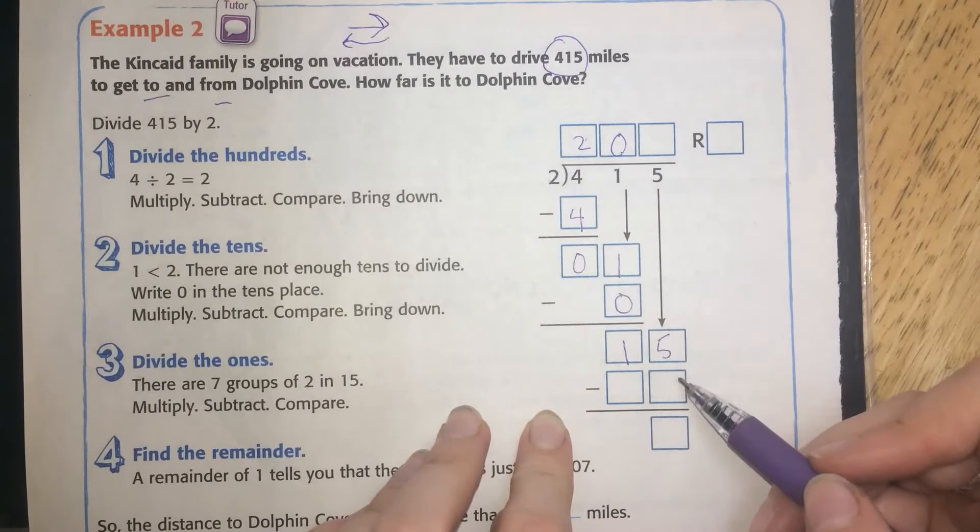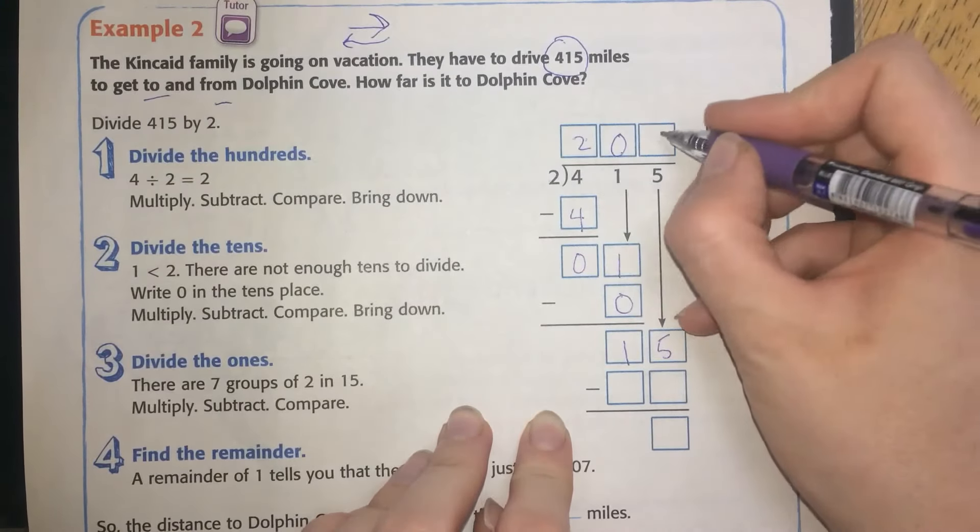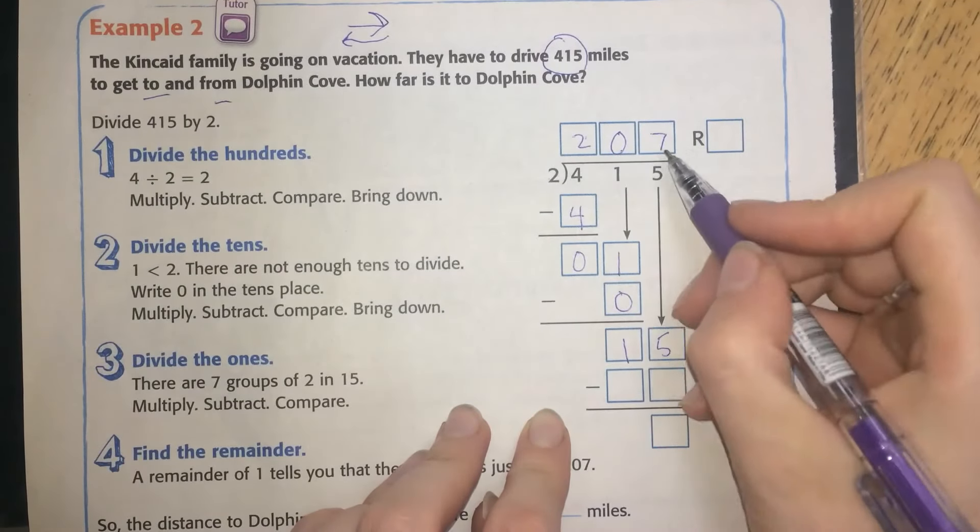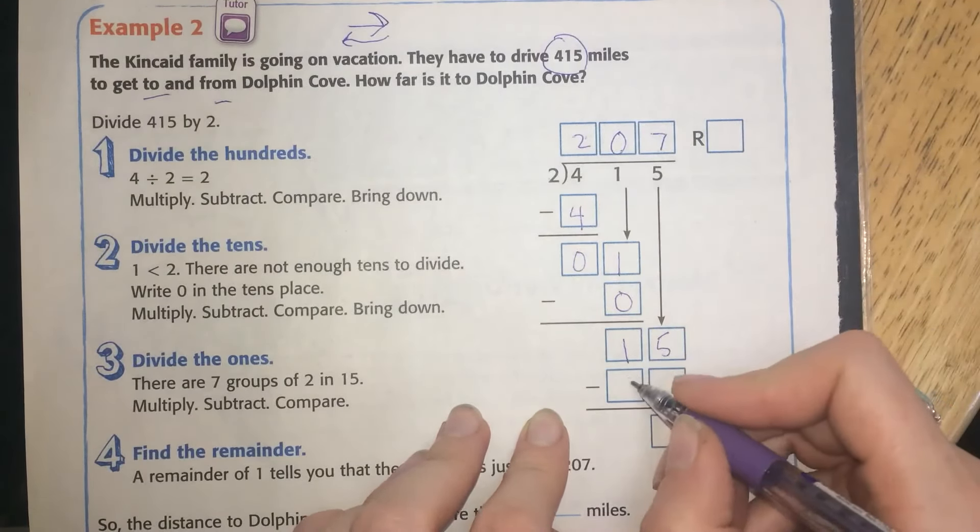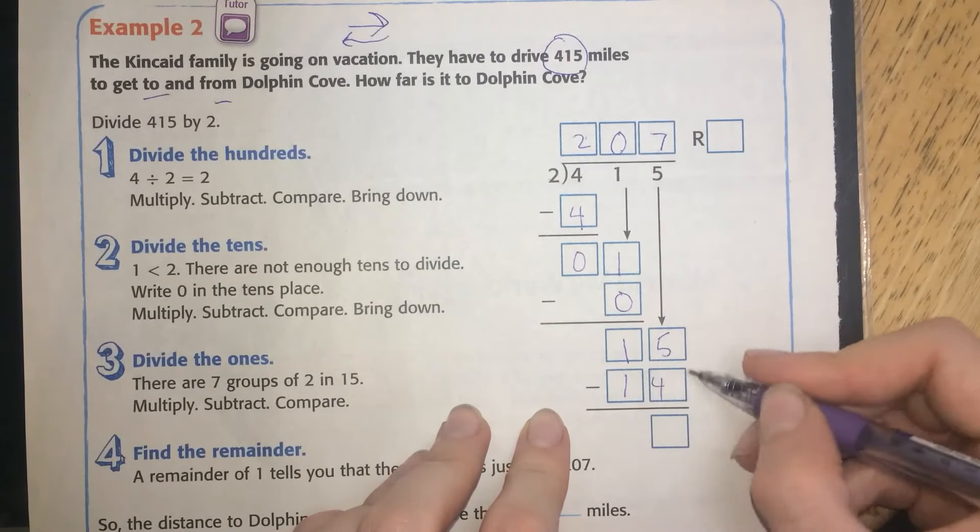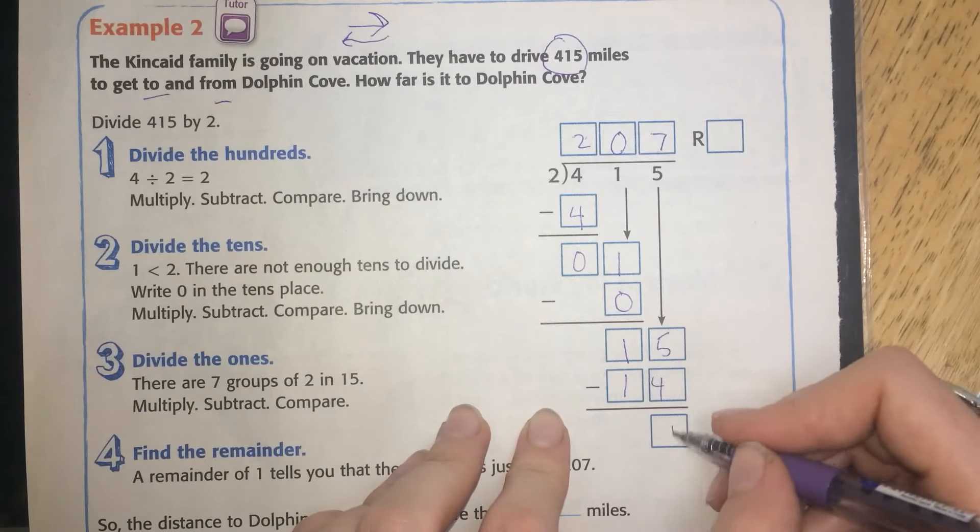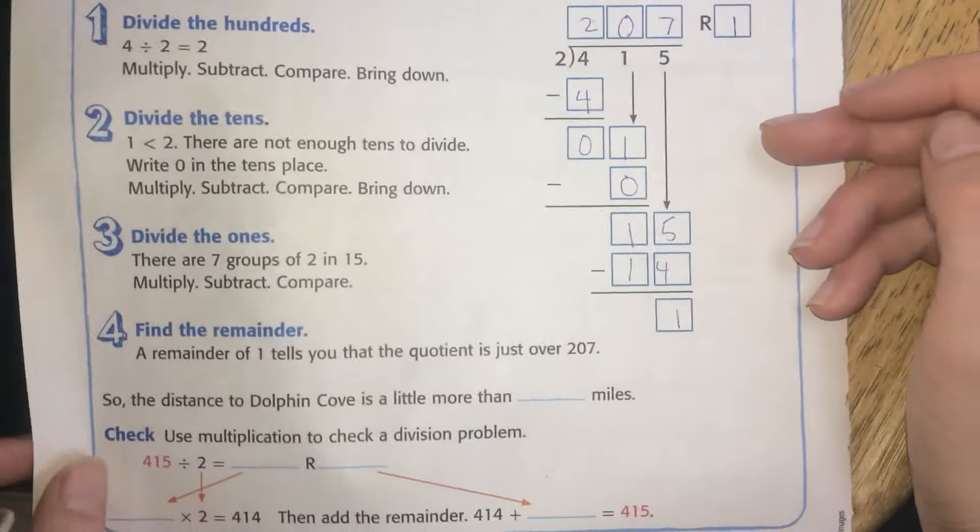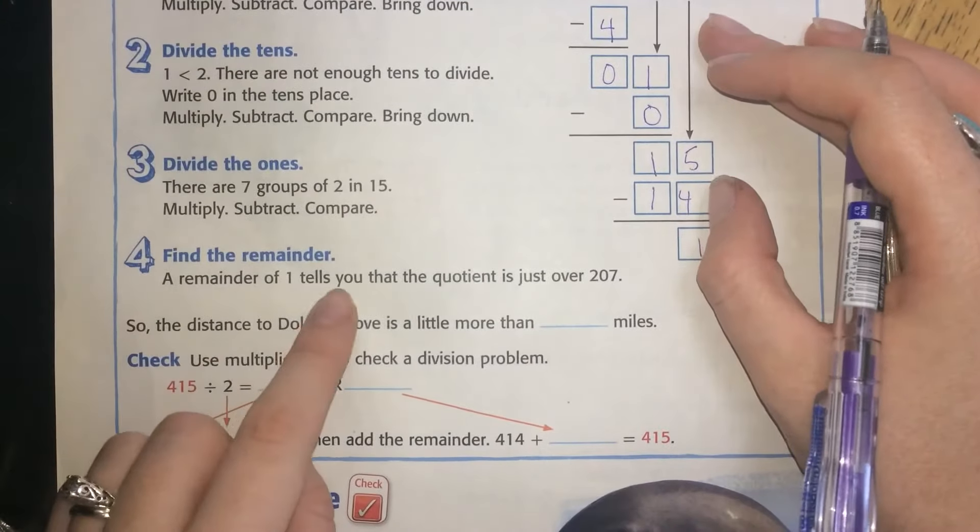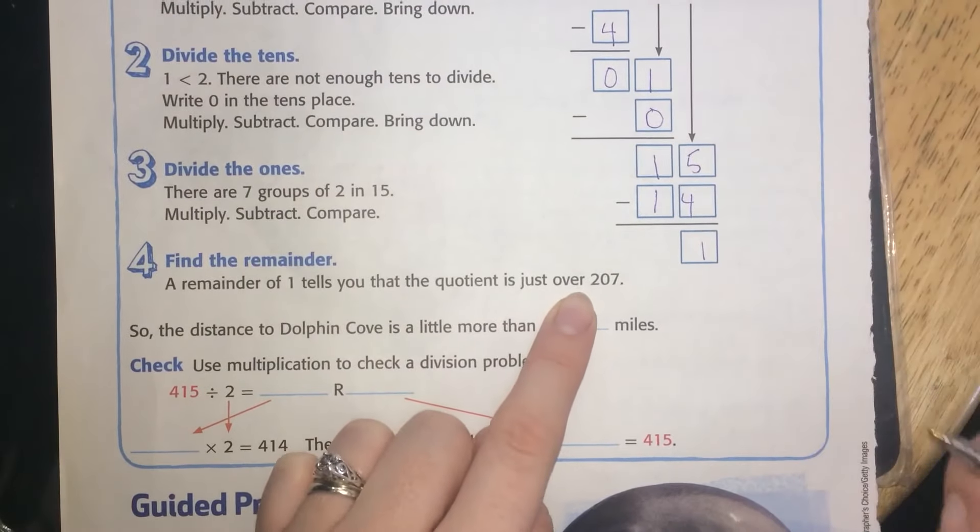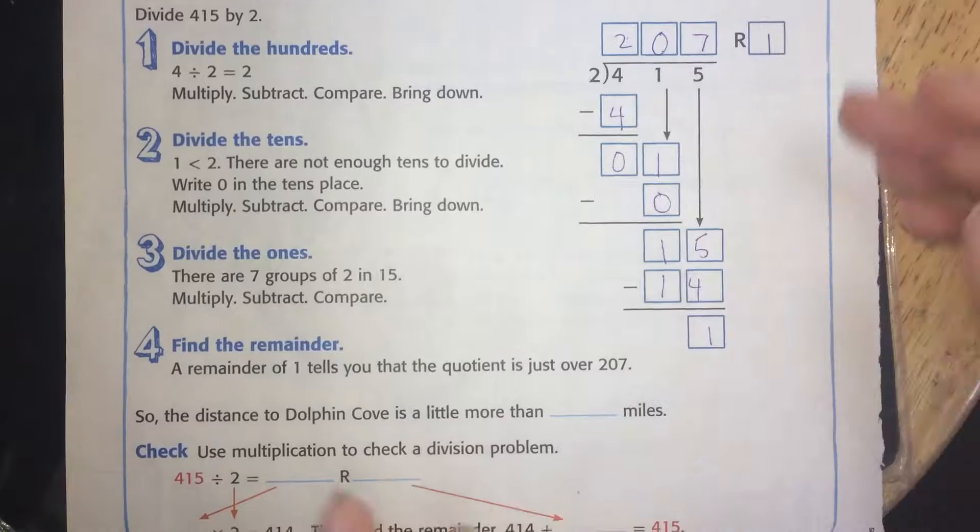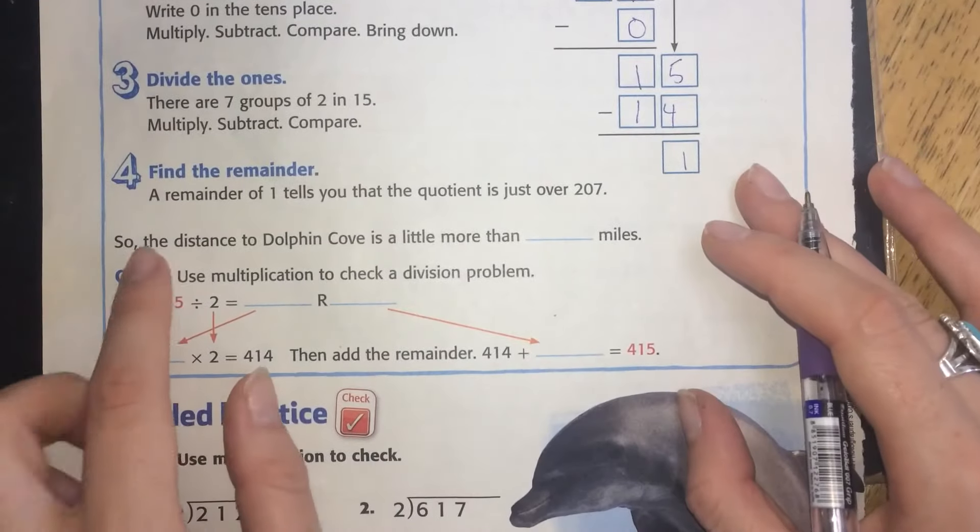Now bring down the 15. How many times can 2 go into 15? 7 without busting, because if you do 8 there, it goes up to 16. 7 times 2 is 14. 15 minus 14 is 1. So we have a remainder of 1. A remainder of 1 tells you that the quotient is just over 207.